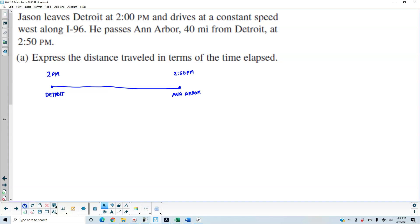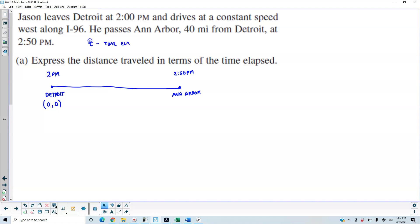If we say that he's leaving Detroit at (0, 0), we have to label what (0, 0) actually means. Since we're dealing with time and distance, we can say that T represents the time elapsed. So if we're starting at (0, 0), that means that time equals 0 and the distance equals 0.